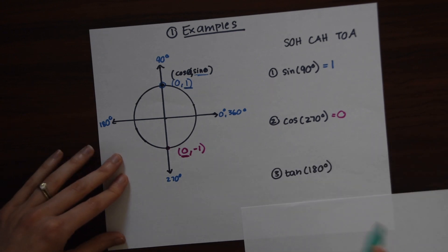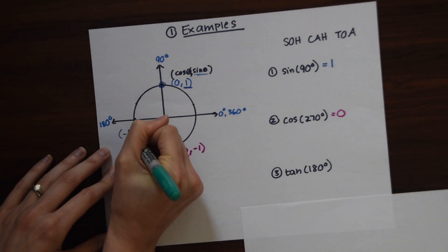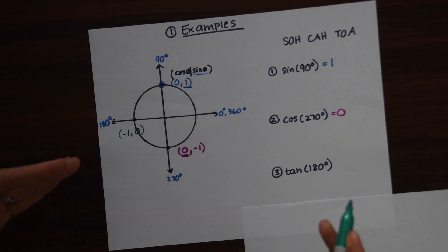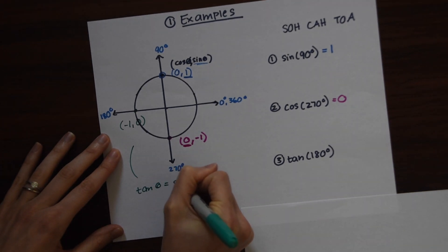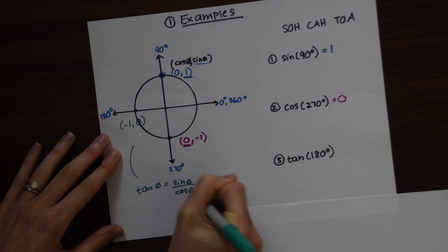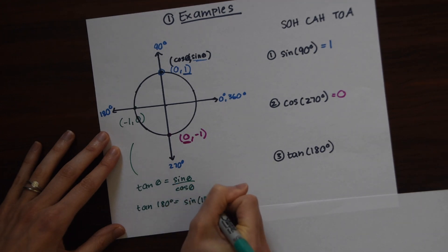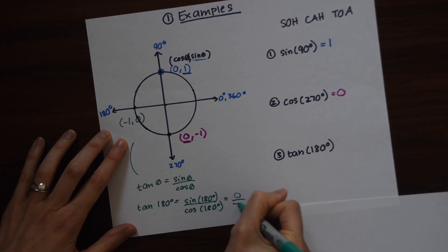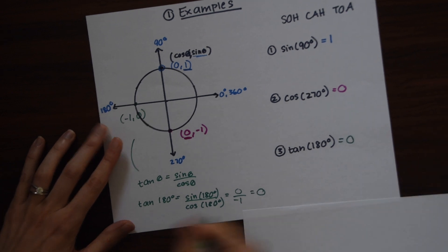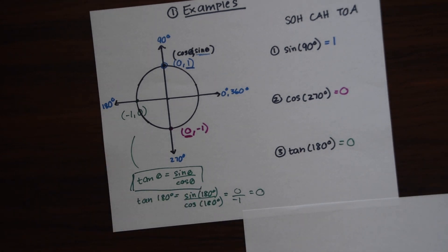For our last example here, tan of 180. Remember that tan of theta is equal to sine of theta over cosine of theta. So if we want tan of 180 degrees, this equals sine of 180 over cosine of 180. The coordinate at 180 is (negative 1, 0), so this is really 0 divided by negative 1, which is 0. Tan of theta equals sine of theta over cosine of theta is an important identity.